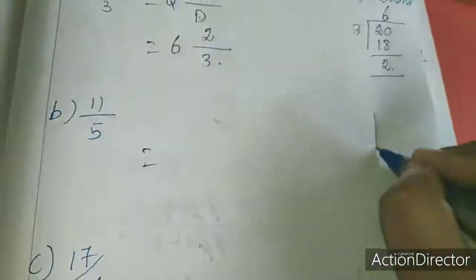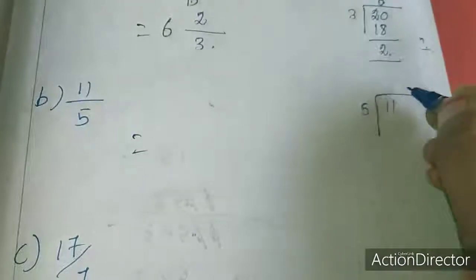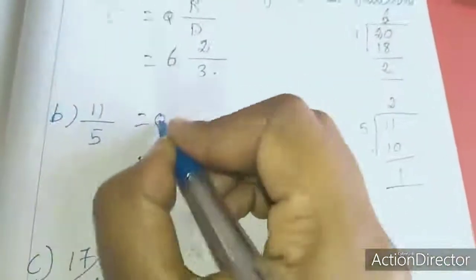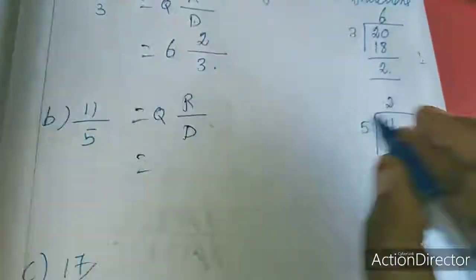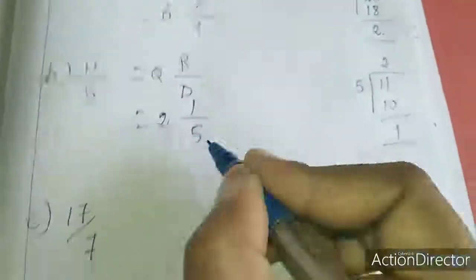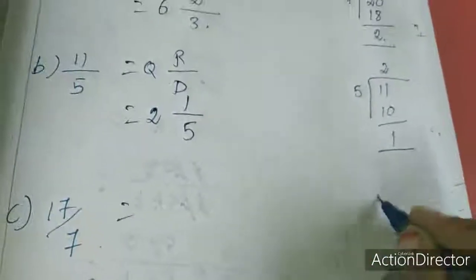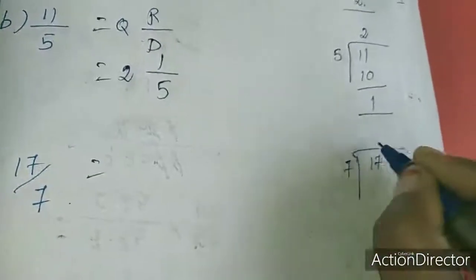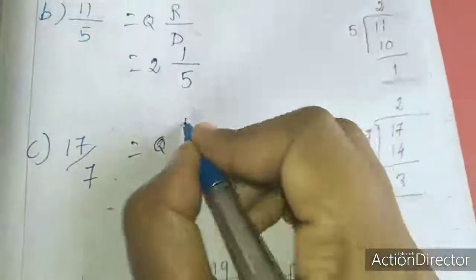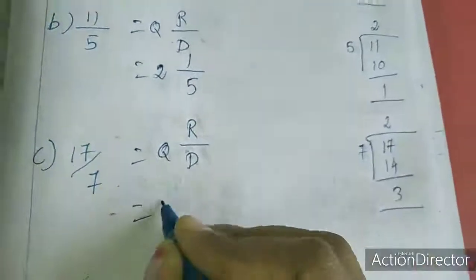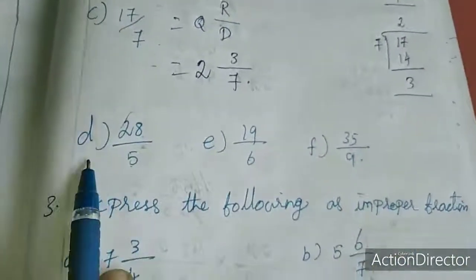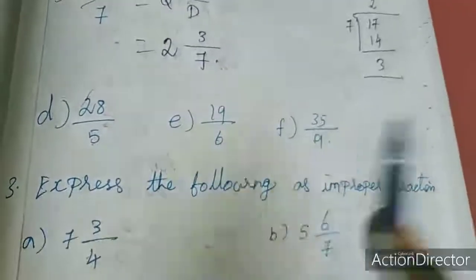Next one — divide 11 by 5. 5 times 2 is 10, remainder is 1. Quotient is 2, remainder is 1, dividend is 5. Next, 17 divided by 7: 7 times 2 is 14, remainder is 3. Quotient is 2, remainder is 3, dividend is 7. Parts D, E, F are homework for you.